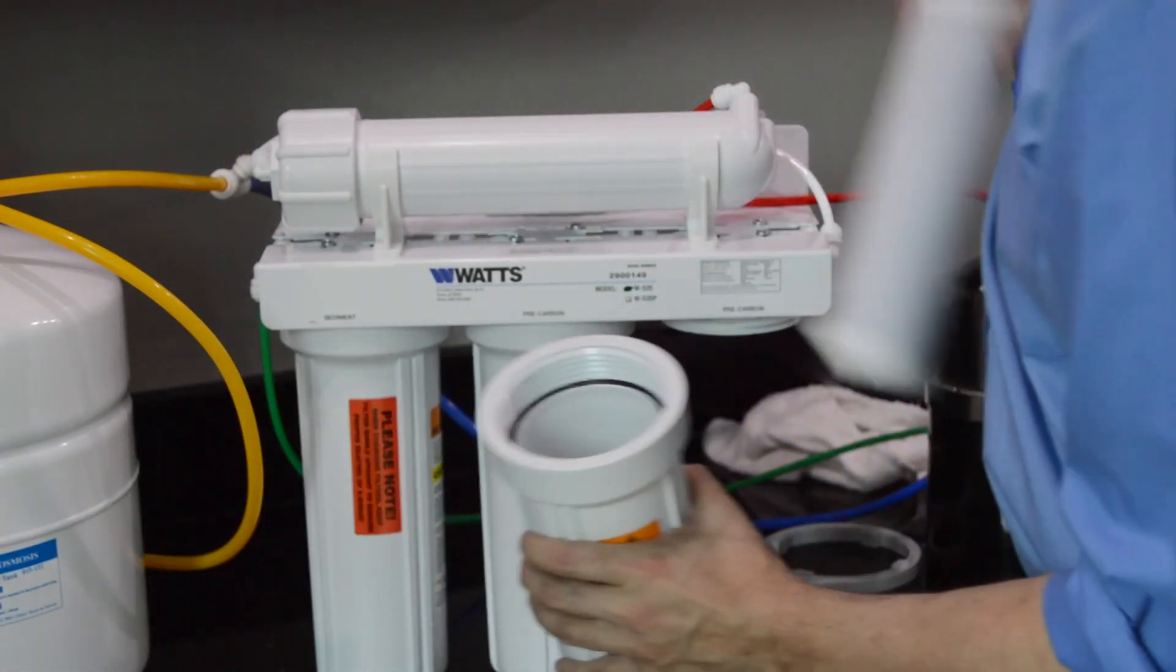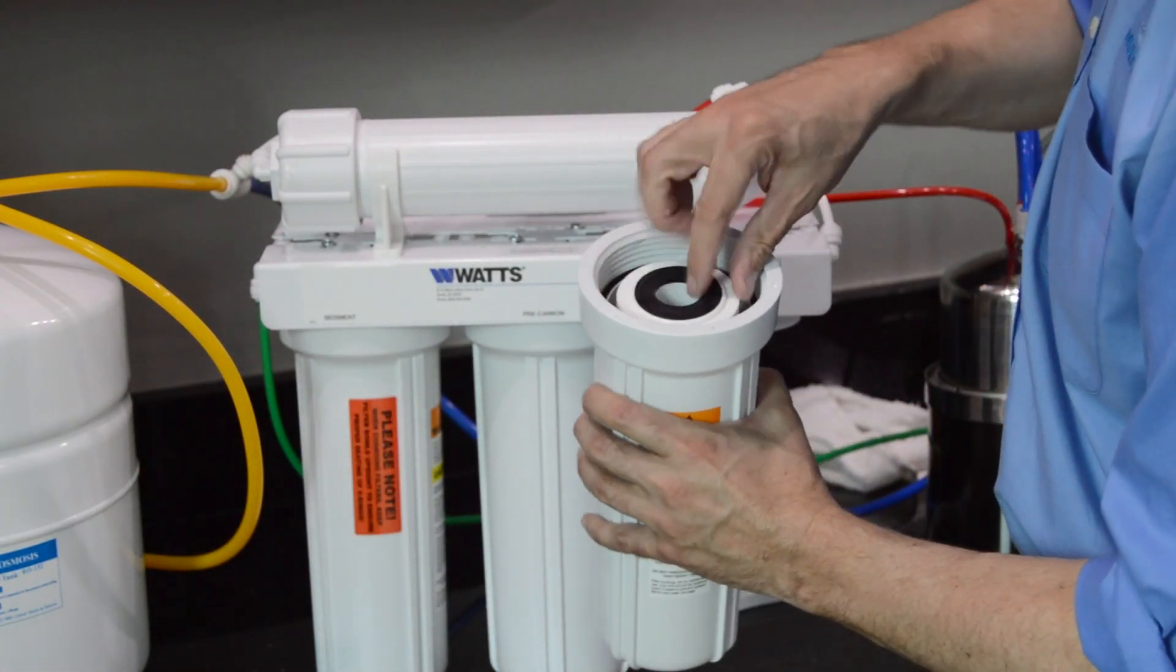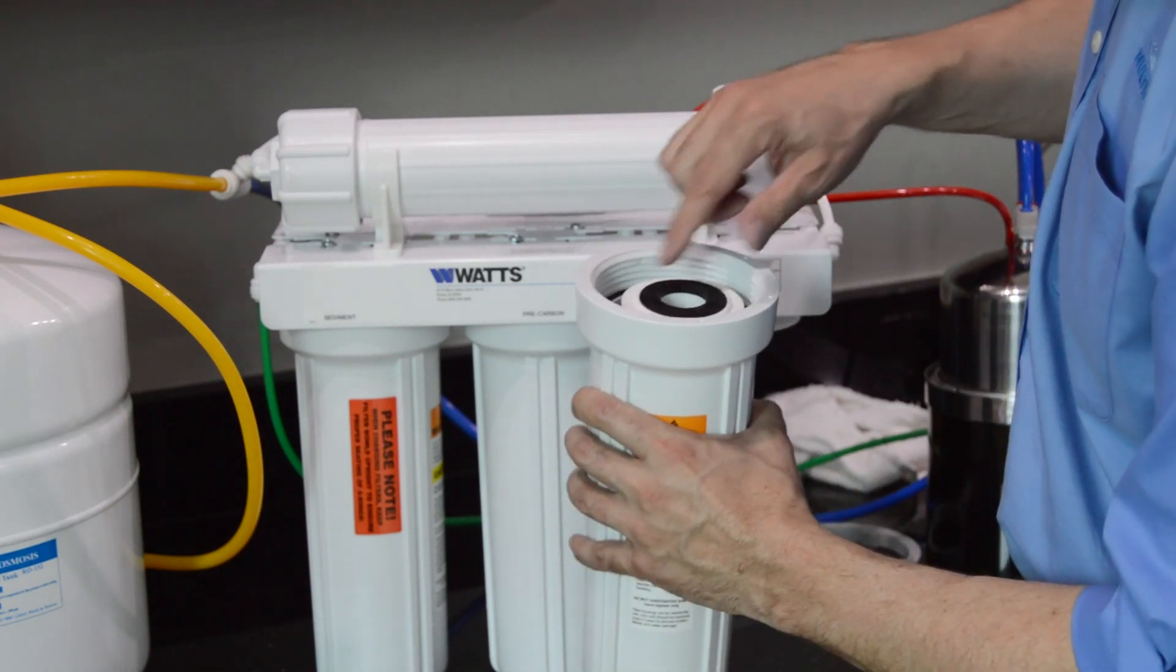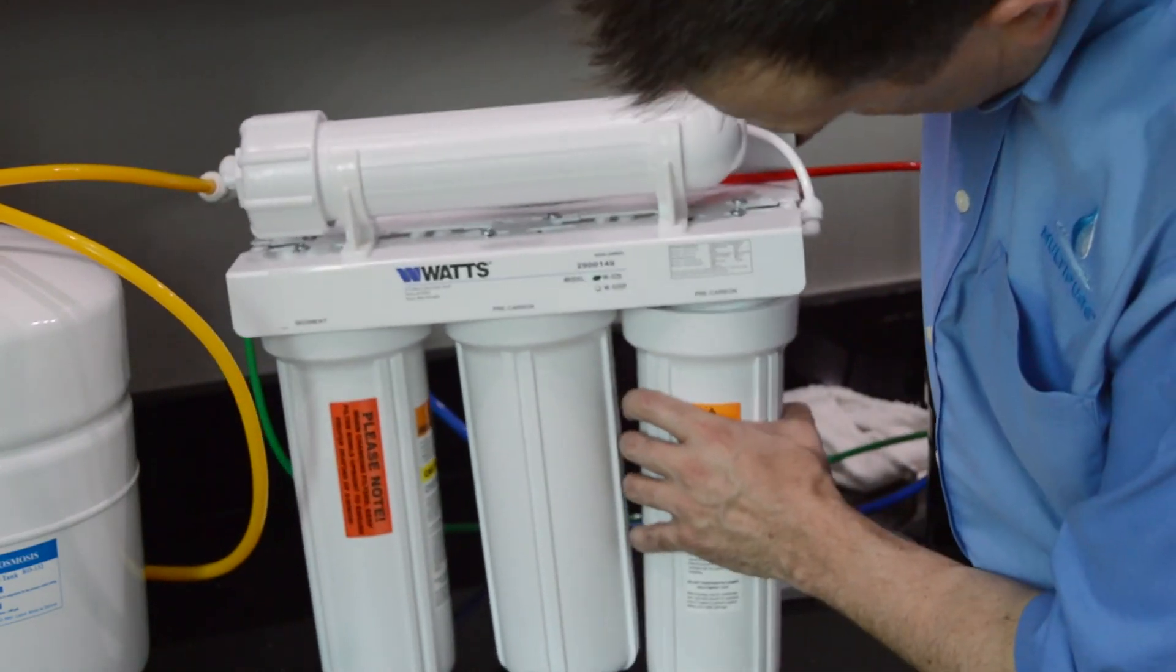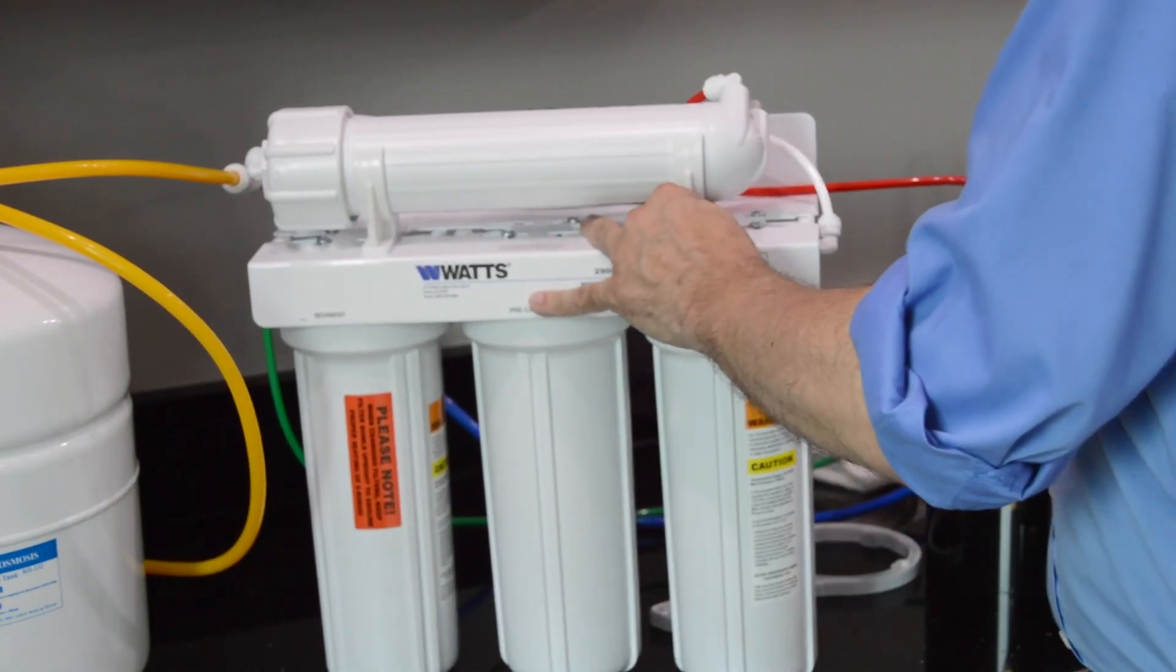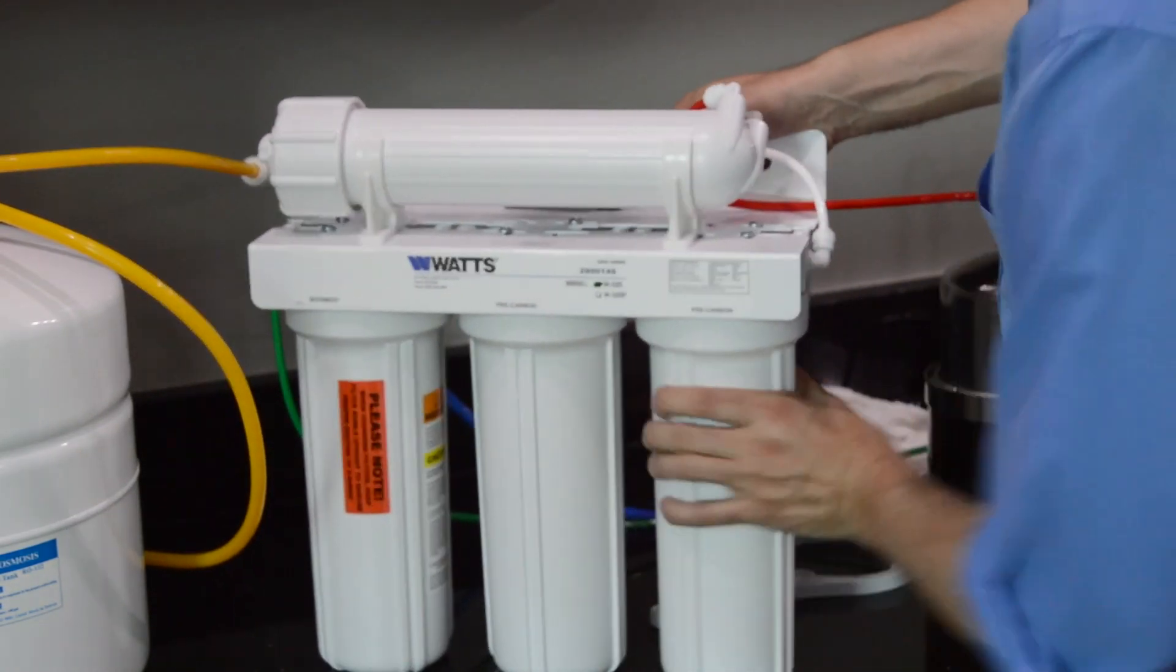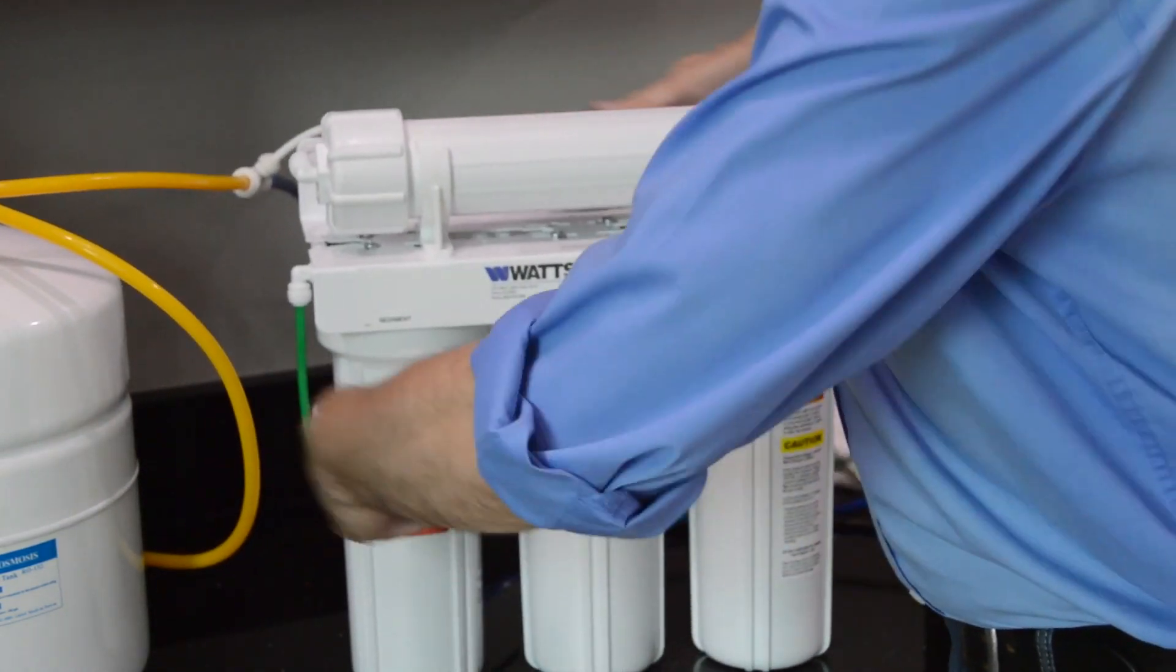Repeat the process with the second carbon block pre-filter. When inserting the new filter, make sure the filter gasket is in good condition. Use the filter wrench to tighten the housing connections.